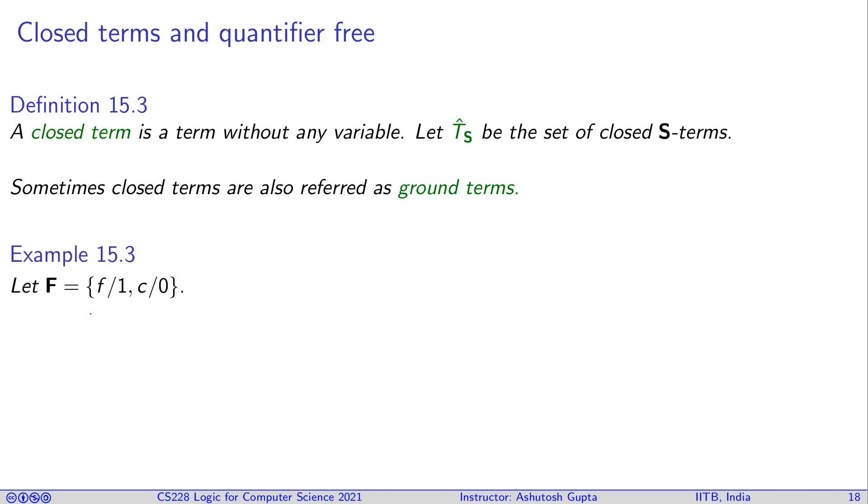Let's suppose you have a signature in which f is a function and c is a constant. Then f of x is not a closed term, but f of c is a closed term.